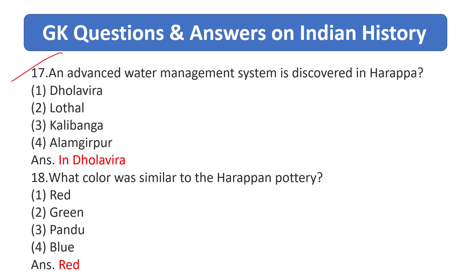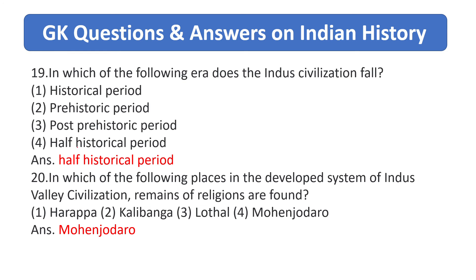An advanced water management system is discovered in Harappa — answer is Dholavira. What color was similar to the Harappan pottery? Answer is red. In which of the following eras does the Indus civilization fall? Answer is the proto-historical period.